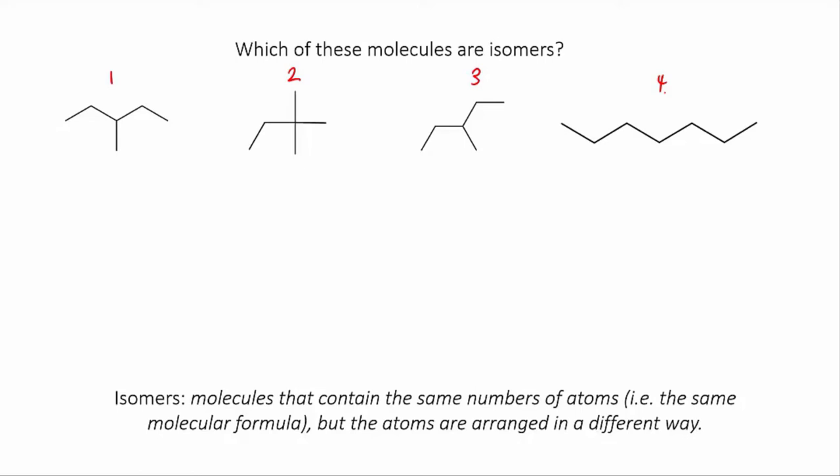I'll start with number one. First, how many carbons are there? One, two, three, four, five, six carbons in this molecule. You have to imagine the hydrogens. On this end carbon, there are three hydrogens. This carbon only has one hydrogen because it's already got three bonds to carbon. Counting them all: six, seven, eight, nine, ten, eleven, twelve, thirteen, fourteen. So C6H14.